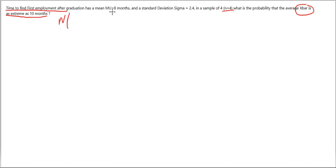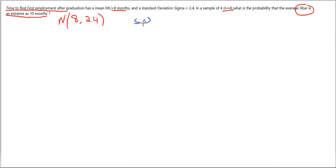We assume the original variable is normal with μ=8 and σ=2.4. Since we're willing to make that assumption, it means that regardless of what sample you take from this population, the sampling distribution of the mean will also be normal.